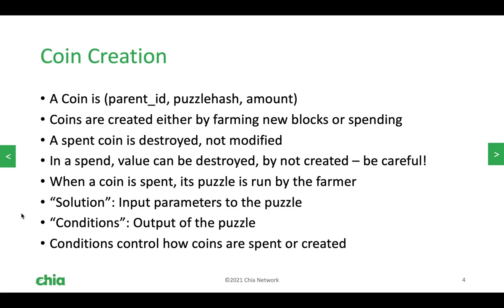A little terminology. Solution in this context means the input to a coin's puzzle. As a programmer, you can think of this as the actual parameters for the formal parameters in your coin's puzzle — whenever you see solution, think input parameters. Conditions — I like to think of conditions as the output of the puzzle. It's the data that your puzzle produces to try to prove to the blockchain that yes, I can spend this coin. We'll go over conditions a bit later.